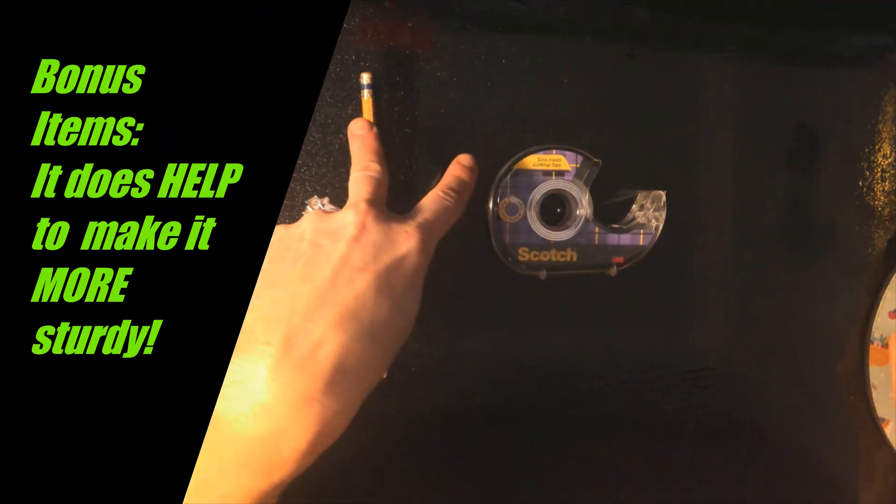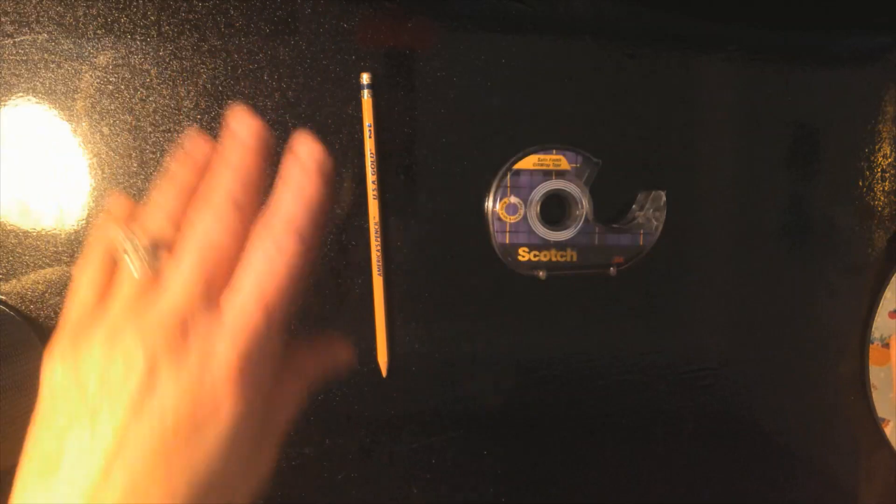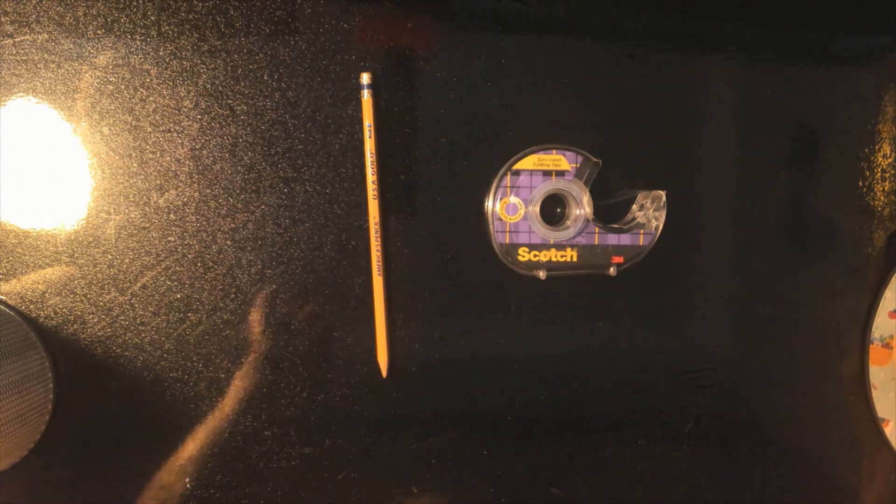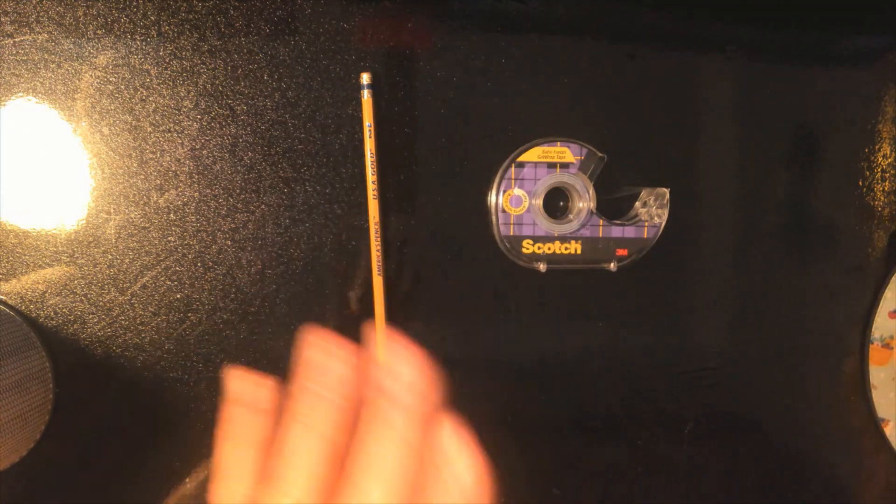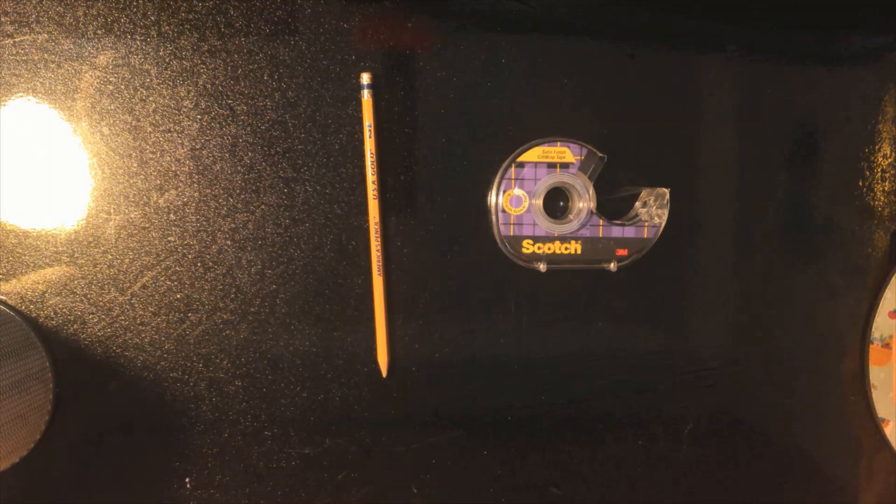Your bonus items you might want to go ahead and get now is a pencil, or a chopstick, or like a skewer. You could even go outside and get a stick, I guess, and some tape, because you'll see it kind of gets flimsy. It'll still work if you don't have these bonus items, but if you want to go ahead and get everything you need now, this does make it a little bit sturdier.